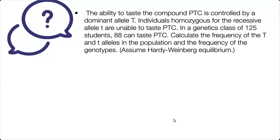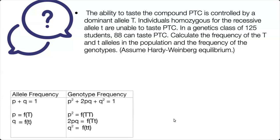Here is another Hardy-Weinberg example, and they are asking us to find all the frequencies of the alleles and the genotypes. So the question states, the ability to taste the compound PTC is controlled by a dominant allele T. Individuals homozygous for the recessive allele, little t, are unable to taste PTC. In a genetics class of 125 students, 88 can taste this compound. Calculate the frequency of the big T and little t alleles in the population and the frequency of the genotypes. And we can assume Hardy-Weinberg to do this.